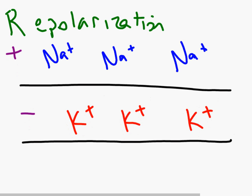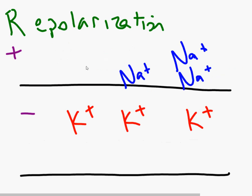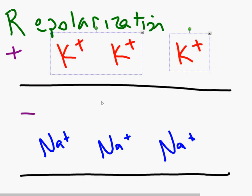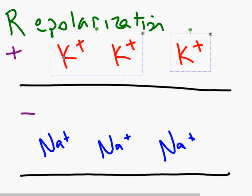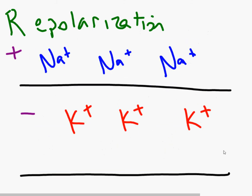Just to go over that quickly again: the nerve is stimulated, sodium goes into the cell — that is depolarization. In order to repolarize the membrane, potassium goes out. Then sodium-potassium pumps pump potassium in and sodium back out to reestablish the resting potential.